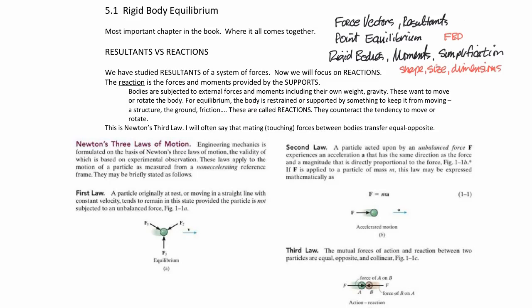Newton's first and second laws are printed here from the textbook. When bodies touch each other — perhaps two bodies or two portions of a body — whatever happens to one body happens equal and opposite to the other body. Those forces that mate together will transfer equal and opposite to the other body. That's Newton's third law: the mutual forces of action and reaction between two particles are equal, opposite, and co-linear. Just get used to me talking about forces transferring equal and opposite.